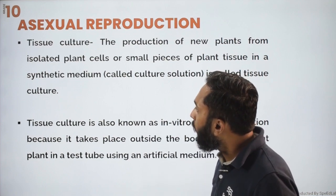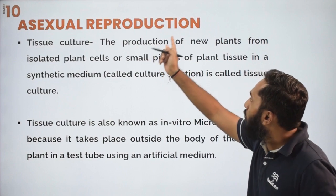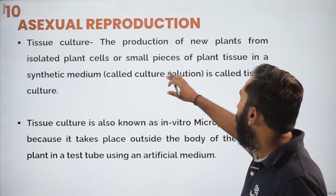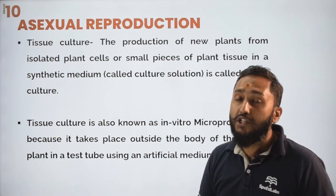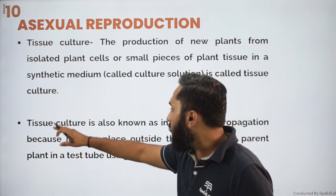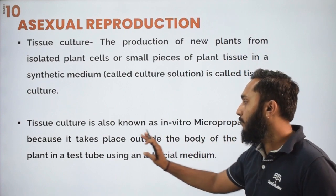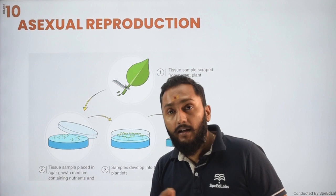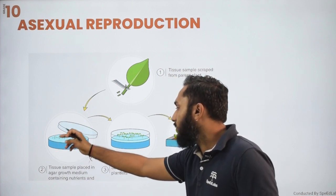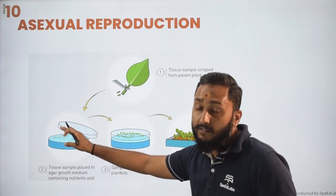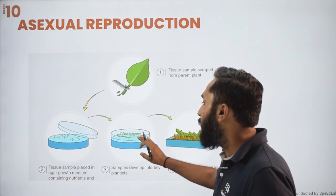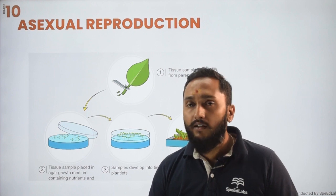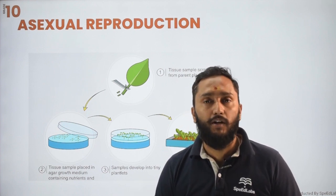We also need to talk about tissue culture. Tissue culture is when you want to grow a new plant in an isolated or synthetic medium, which can be performed in a lab. Here you nourish the tissues of a plant which will grow. Tissue culture is also known as in vitro micropropagation because it takes place outside the body of the parent in an artificial medium. You can see here a petri dish with agar medium nourishing the cells or tissues of the plant.